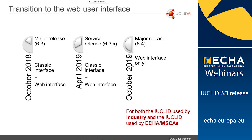Moving on to the plans for 2019: currently in October 2018, you have both the classic interface and the web interface available. We hope that by October 2019, we can replace the classic interface with the web interface. This depends on stakeholder feedback and the level of development reached with the web interface. This is planned for all Euclid users — affecting industry, ECHA, MSCAs, and other international users. In the April service release next year, it will be the same as this release, giving you the opportunity to use both the classic and the web interface.